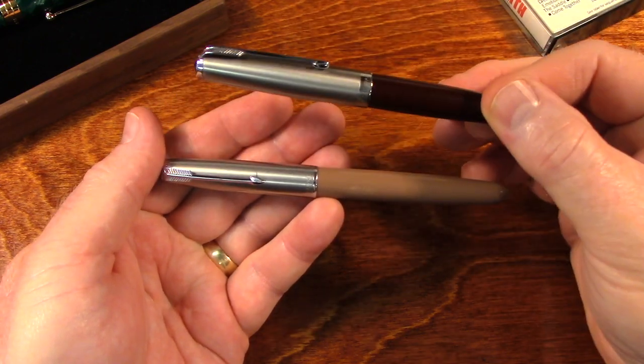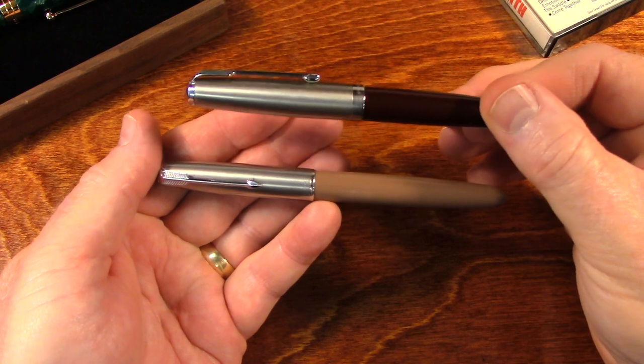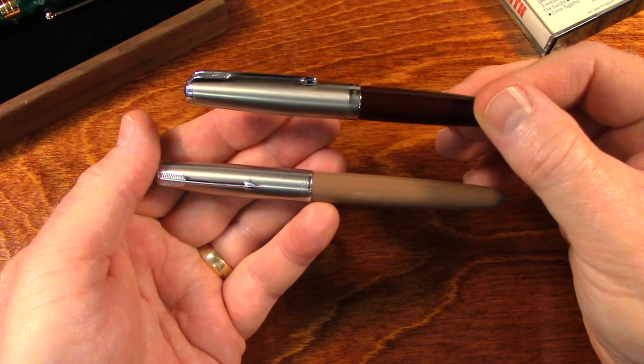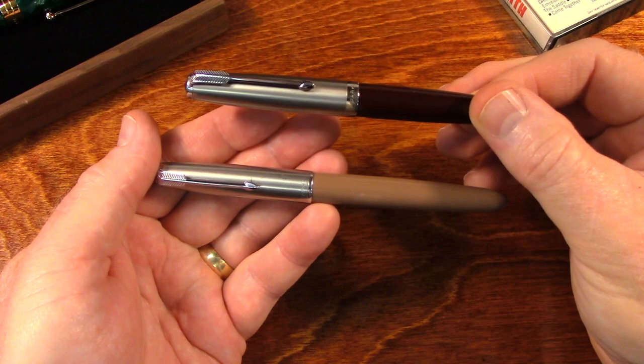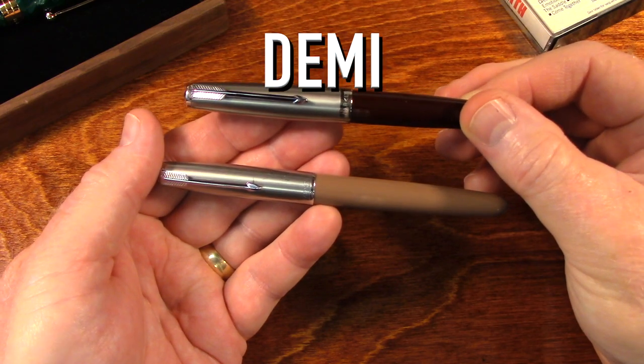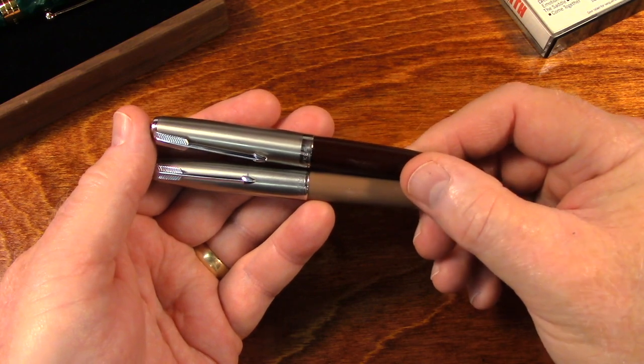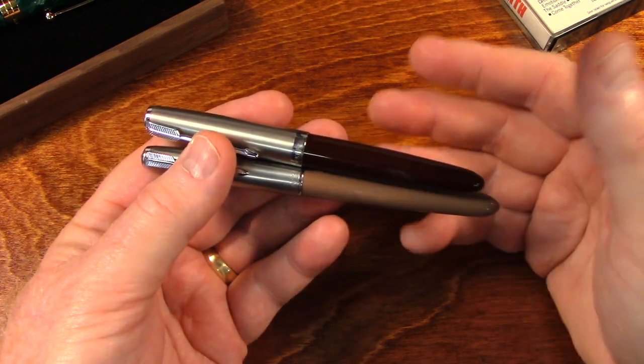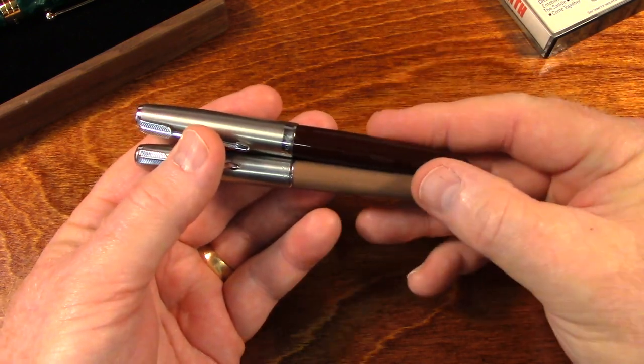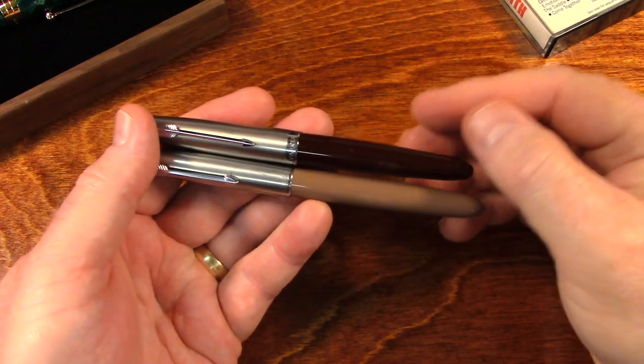You can see the difference in the length. This one is smaller. It's called a Demi Parker 51. D-E-M-I, which means Demi means smaller, half size. It's not really half size, but it is smaller, so it's called a Demi.